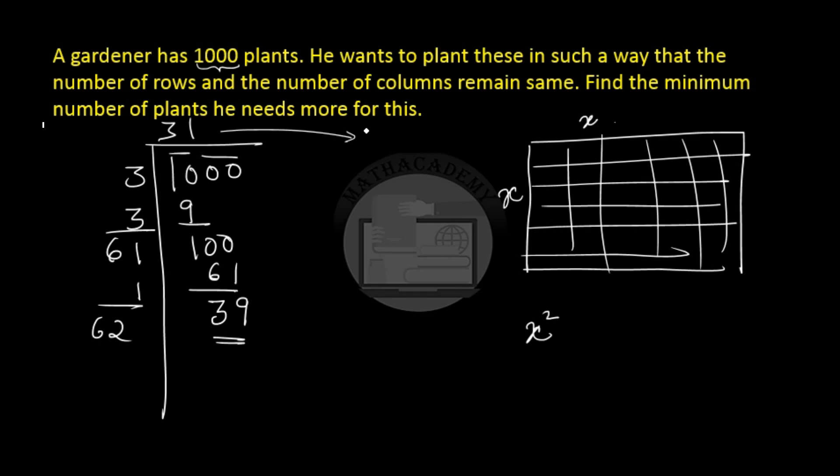We need to find how many more plants do we need to add. So we will take the next number after 31 which is 32. So 32 squared will be 1024. So to fill in this complete square of x by x we need 1024 plants. So the extra plants we need to fill in this space completely are 1024 minus 1000 which are 24 more plants needed.